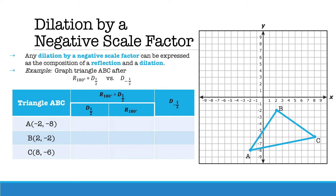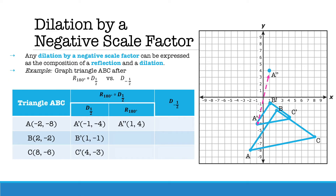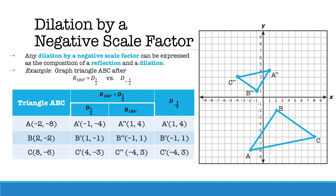Lastly, let's look at a dilation by a negative scale factor. Any dilation by a negative scale factor can be expressed as the composition of a reflection and a dilation. We're going to compare a rotation of 180 follows a dilation of one-half versus a dilation of negative one-half. We first perform the dilation of one-half, and then comparing each image for the rotation of 180, you will see that A prime goes from (-1, -4) to (1, 4), B prime also changes both signs, as well as C prime changing both signs. This is the same thing as dilating by negative one-half — we dilate and then rotate the image 180 degrees to account for the negative.